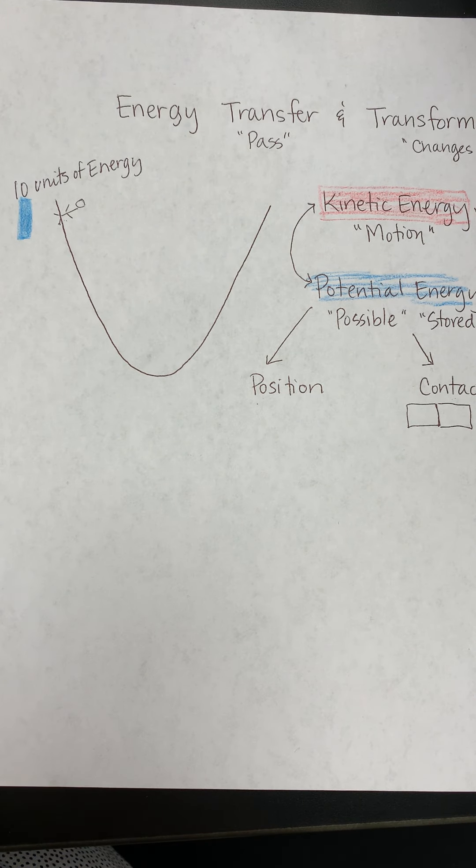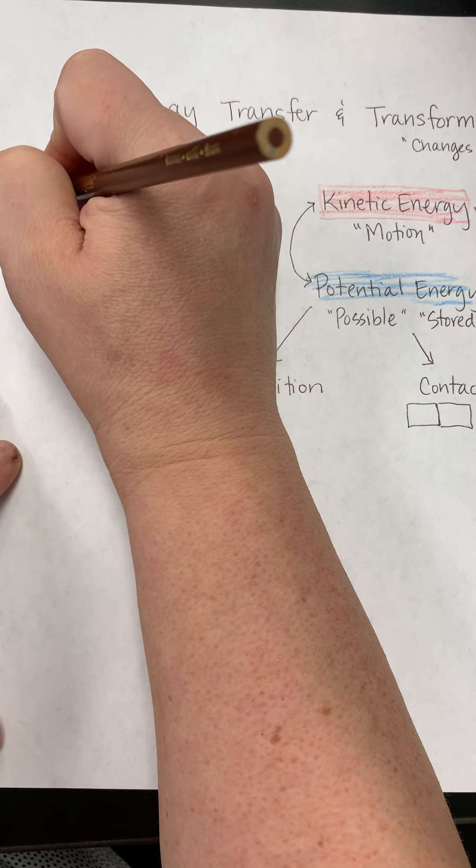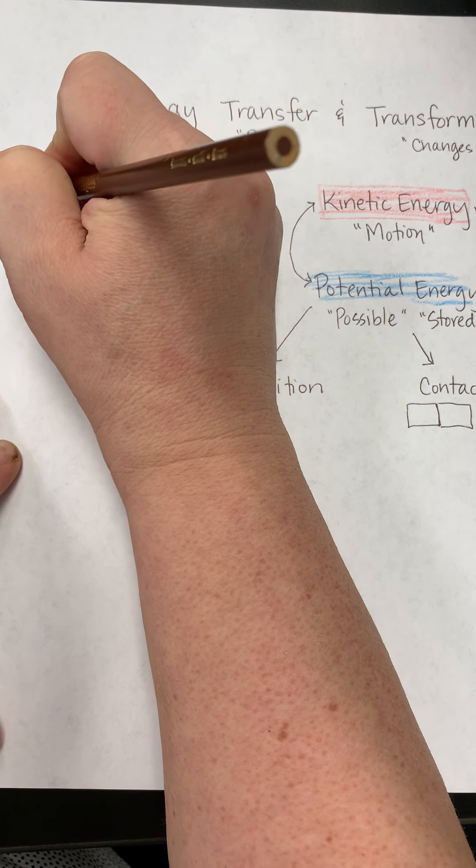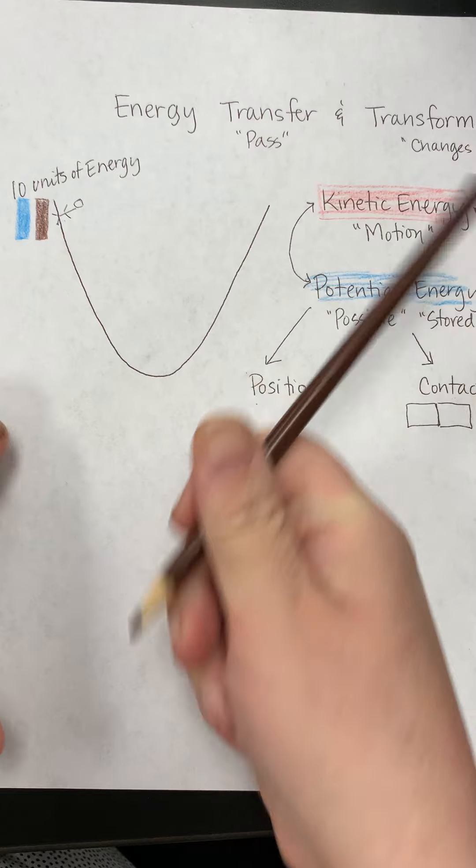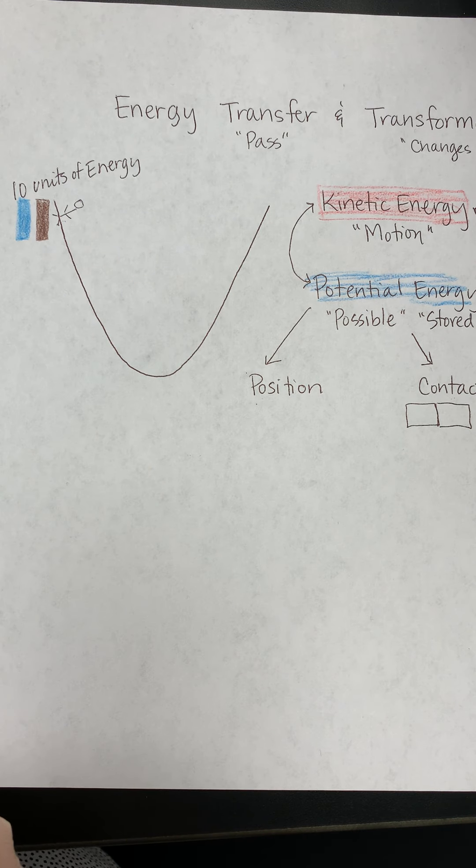And if we do it like the graph that they have on the PhET simulation, we'll say that this brown box represents the total energy. Okay, so, at that moment, there's no kinetic energy. It's all potential.